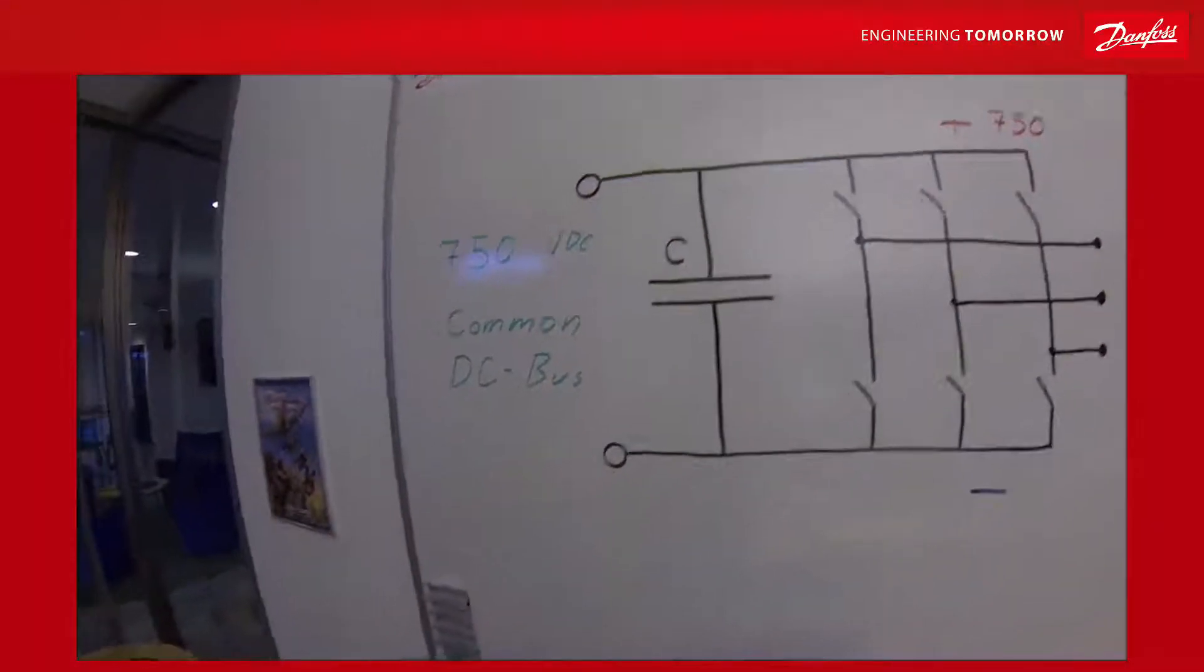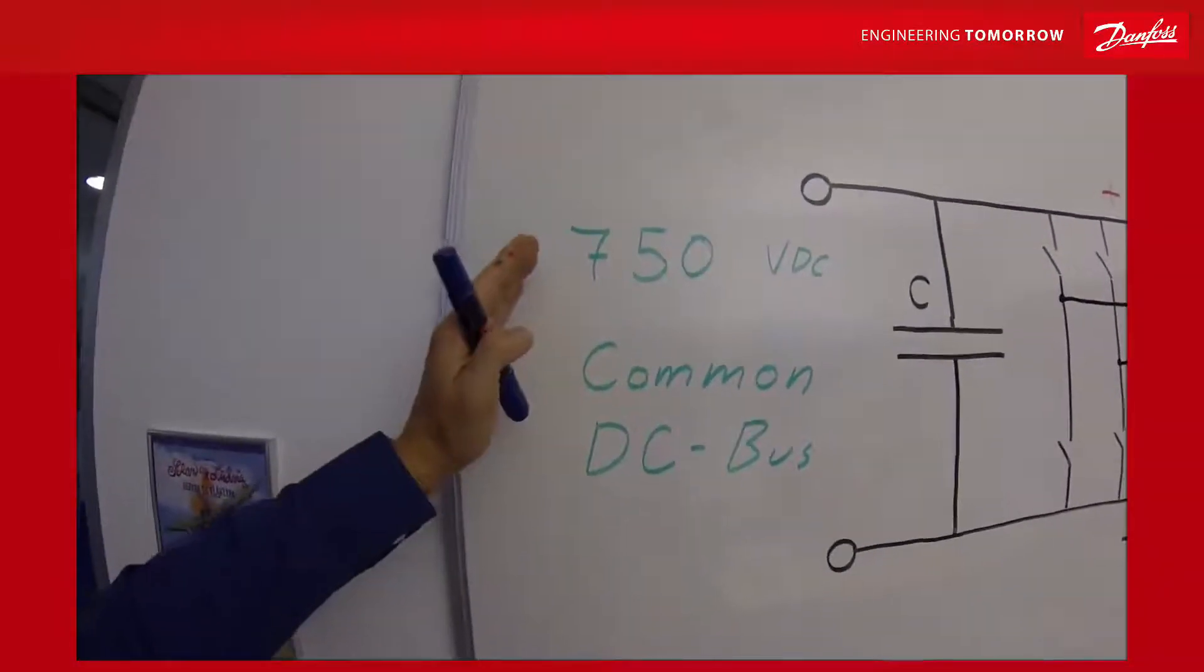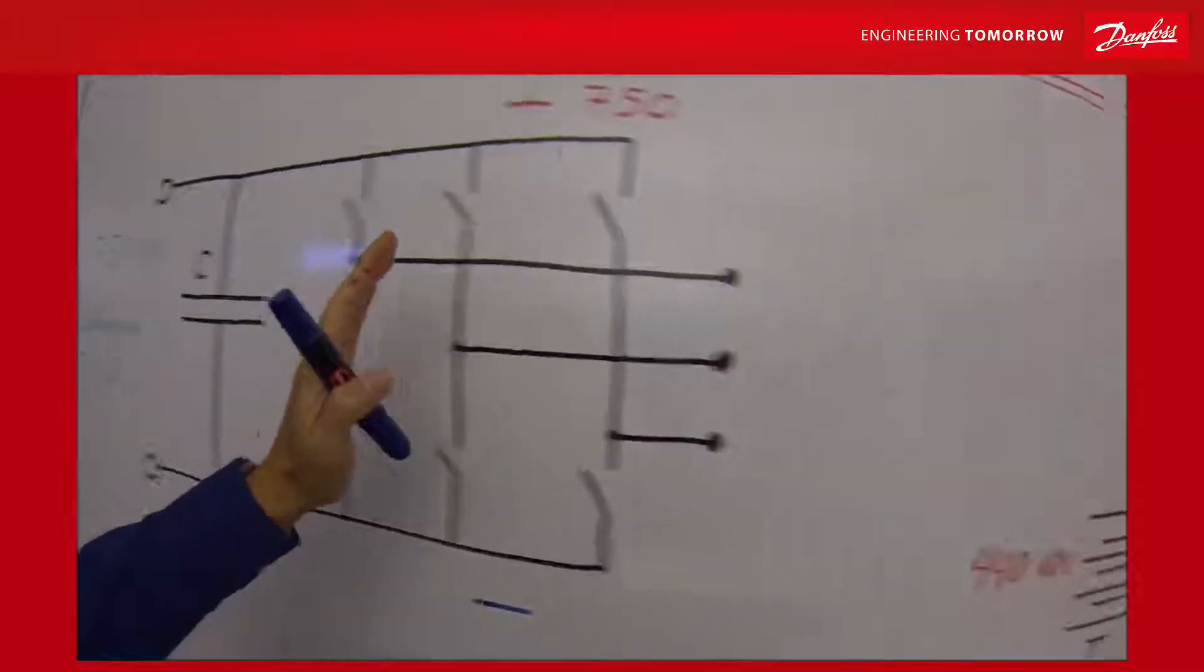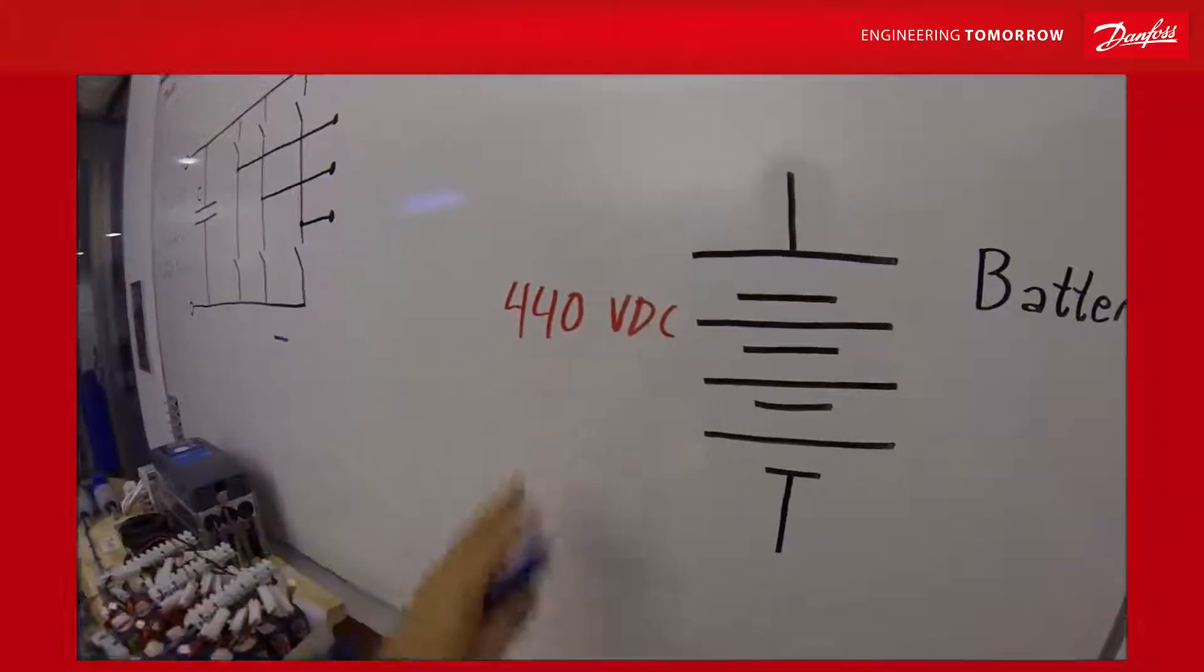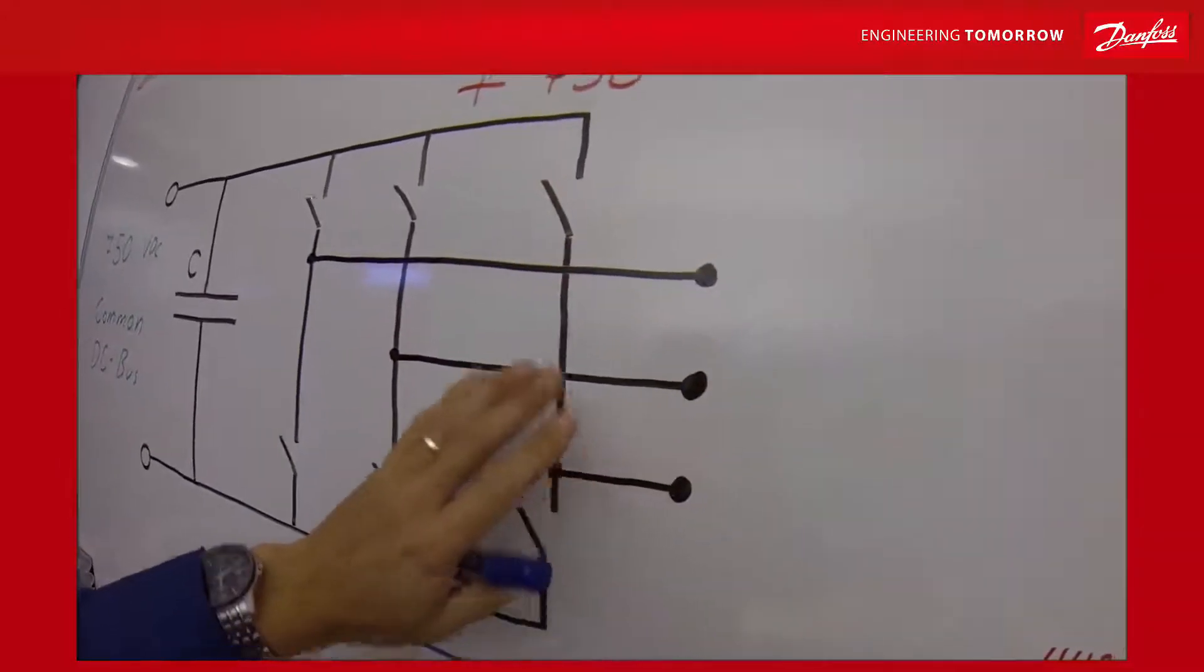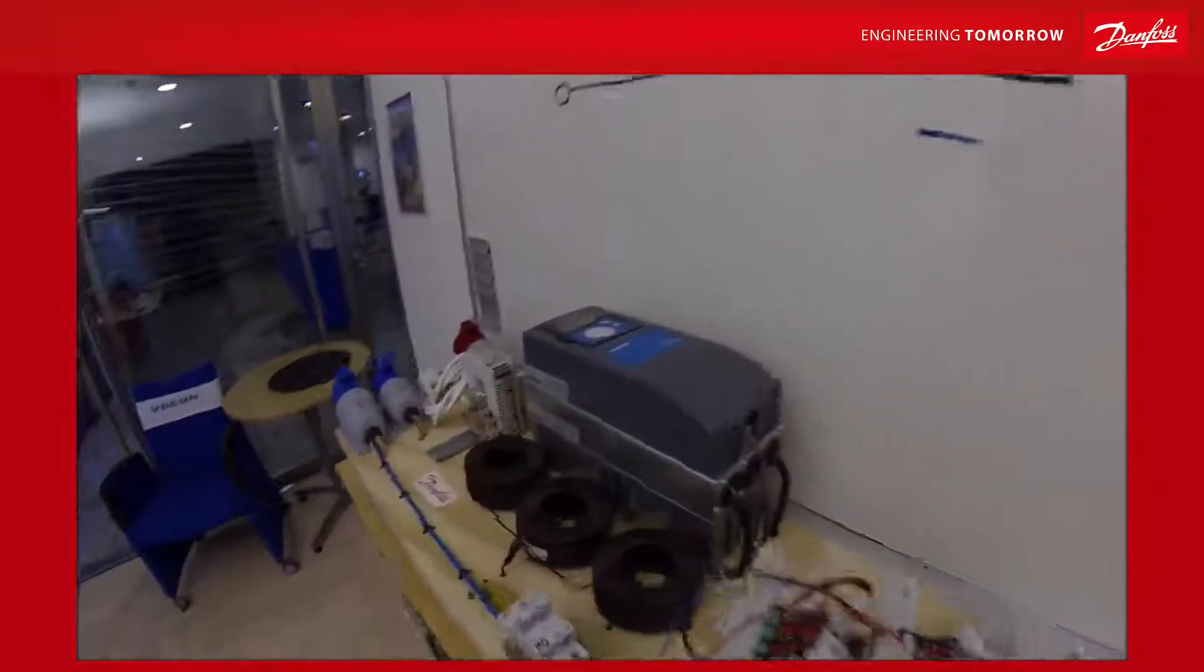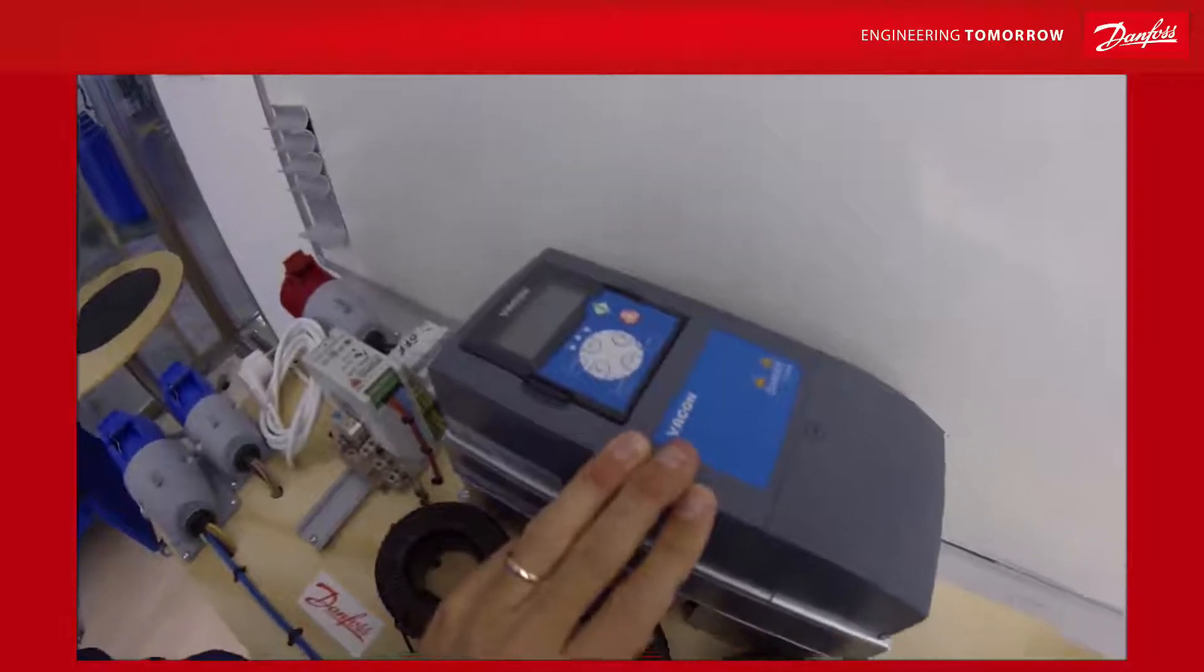We are now going to look into how the DC converter works. How can we connect a common DC bus system of 750 volts to a battery of only 440 volts? And also we use the IGBT side. Normally the motor is connected to this side and we actually power a battery. And we do all this with a regular frequency converter straight out of the shelf.